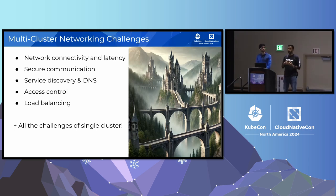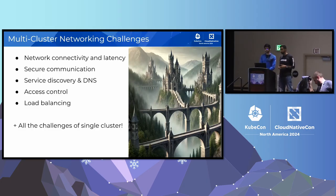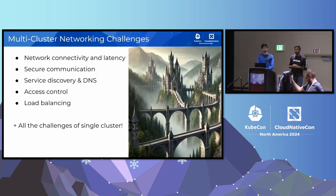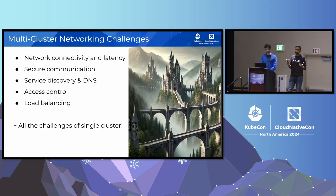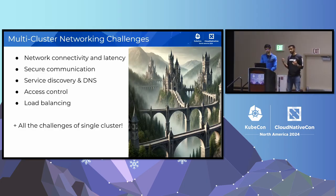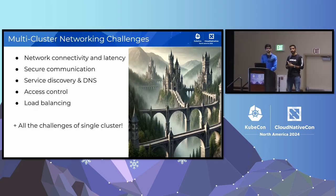Once connectivity is done, you need to figure out how packets going from cluster to cluster are handled. Are they encrypted? Is it mTLS? How do you communicate securely? You need to resolve service discovery and DNS across both clusters. And then things like unified access control and load balancing logic — all things you have to re-solve that a single Kubernetes cluster already gives you out of the box. Kubernetes clusters were never designed from the beginning to be grouped together into one big massive cluster.